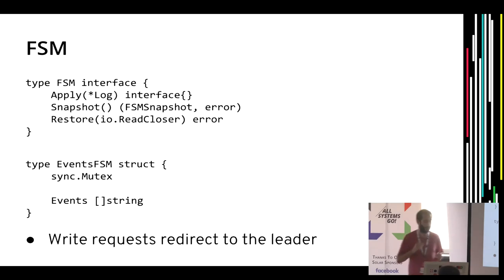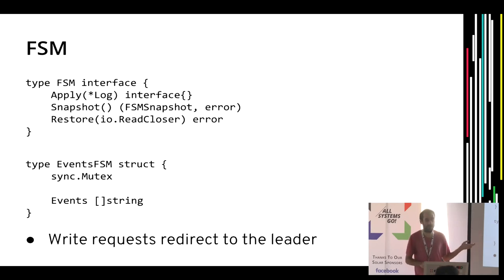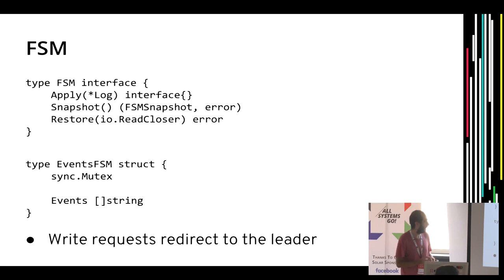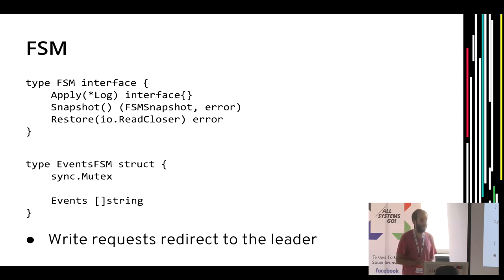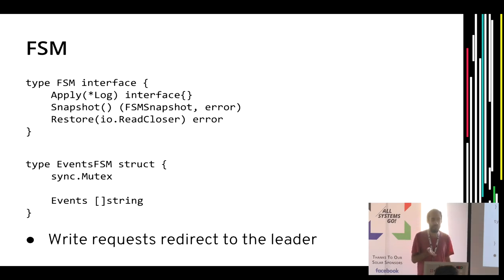The FSM interface is an abstraction the Raft library provides, so you can have a finite state machine of your own data structure. In this example, I have a Go struct with a slice of events (simple strings) and a mutex to avoid concurrency problems, then implement the required operations. You can change this structure and store whatever you want, and this state will be replicated through all cluster members. Write operations can only be done on the leader, which simplifies the protocol implementation — if there's a write request, we redirect it to the leader.